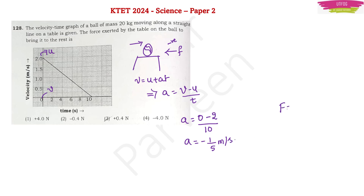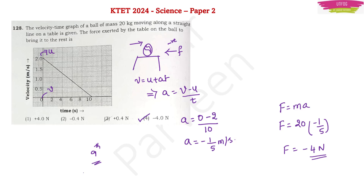We have force = mass × acceleration from Newton's second law. Force = 20 kg × (−1/5) = −4 Newtons. So option 4 should be the correct answer. I initially thought they may not give this type of tough question, but I later realized that this question is given directly from the 9th standard book. Option 4 is the correct answer.